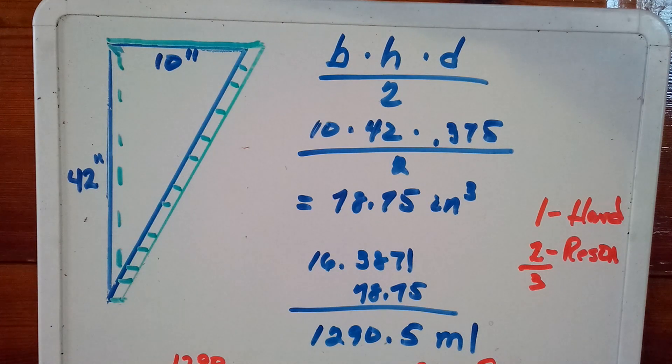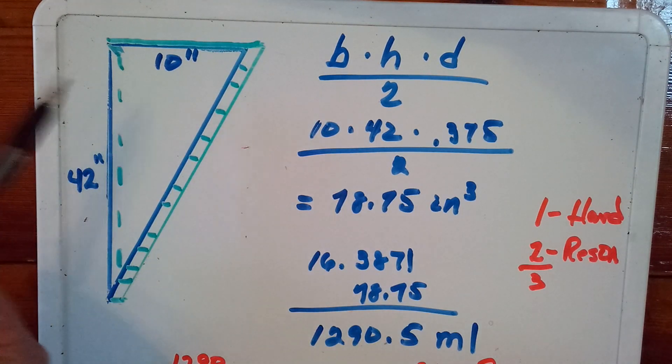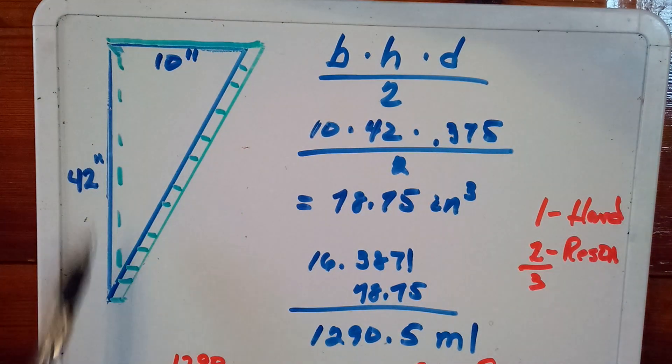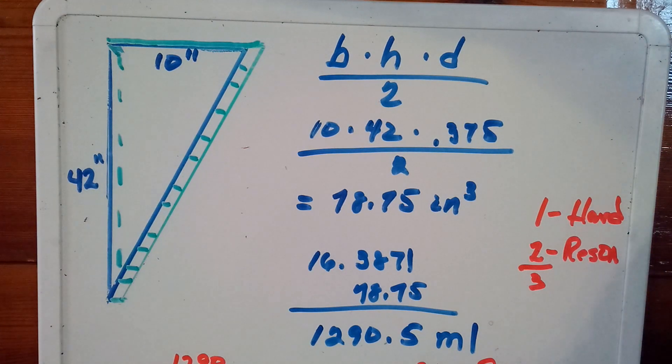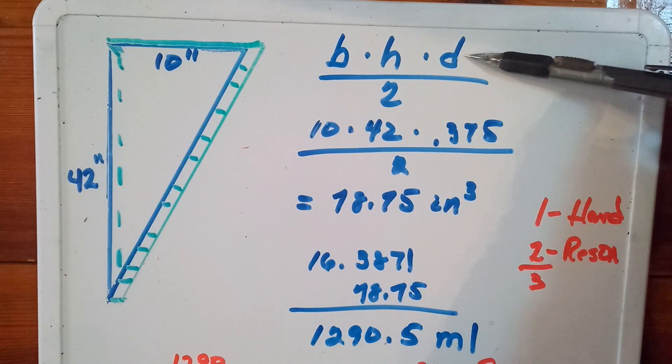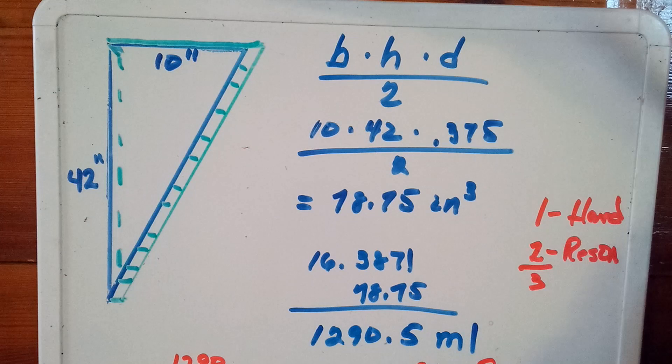All right. For our table today that we just previously looked at, here's the actual calculation I used to do my first pour, which was the colored layer to give opaqueness so that you cannot see through it. Once again, it was a triangle. The base, so the short side, was 10 inches. The long side, along the edge of the table, is 42 inches. So our formula is base times height times the depth of the pour, this area right here, divided by two.